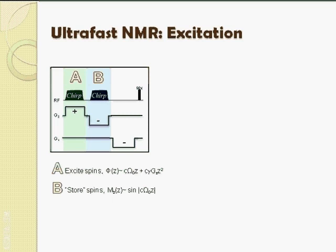In the absence of a chemical shift, the spins will return to their original position along the z-axis, as if nothing has happened. However, in the presence of a chemical shift, the stored magnetization along the z-axis will become modulated by the chemical shift. Let us view this in action.